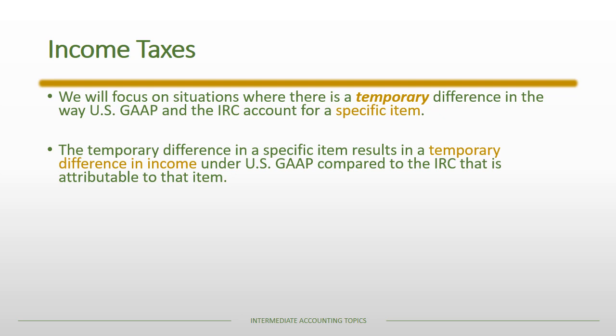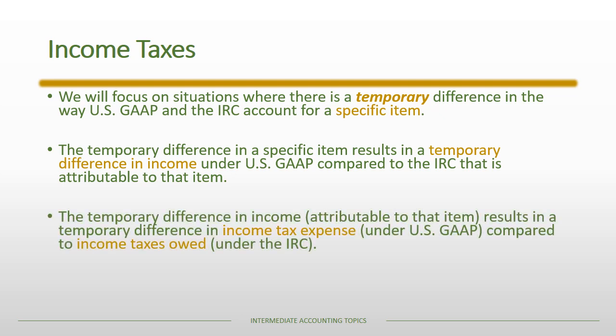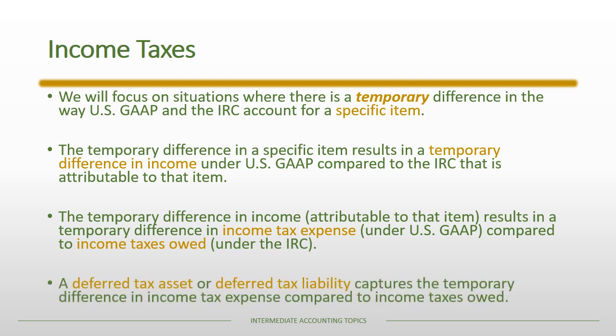For example, if we have a receivable under US GAAP but the Internal Revenue Code does not recognize that receivable, there is a temporary difference in that item. That temporary difference in the item creates a temporary difference in income, which in turn creates a temporary difference in income tax expense compared to the income taxes that are owed. A deferred tax asset or deferred tax liability captures that temporary difference in income tax expense versus taxes owed.